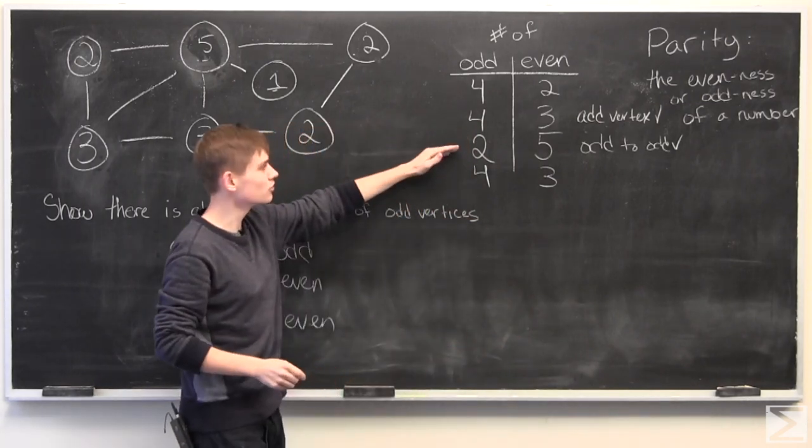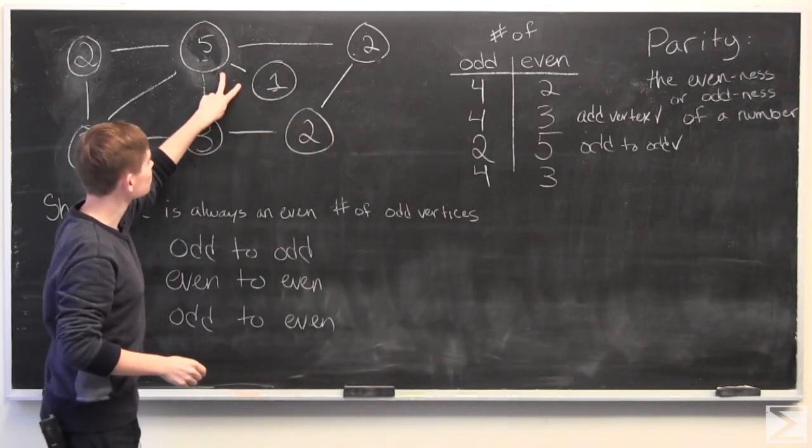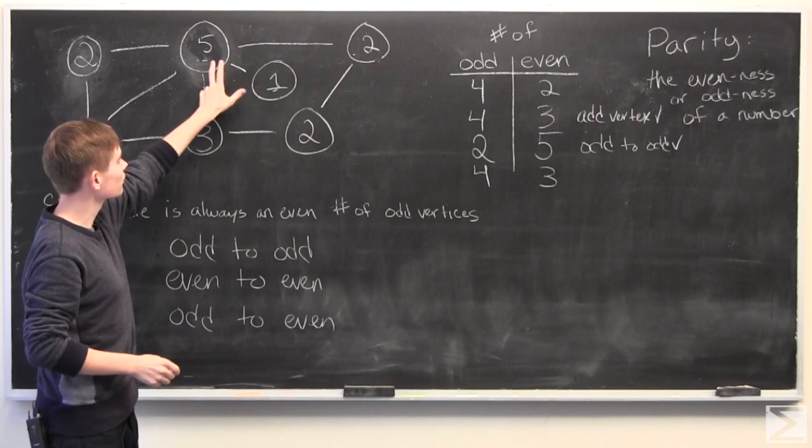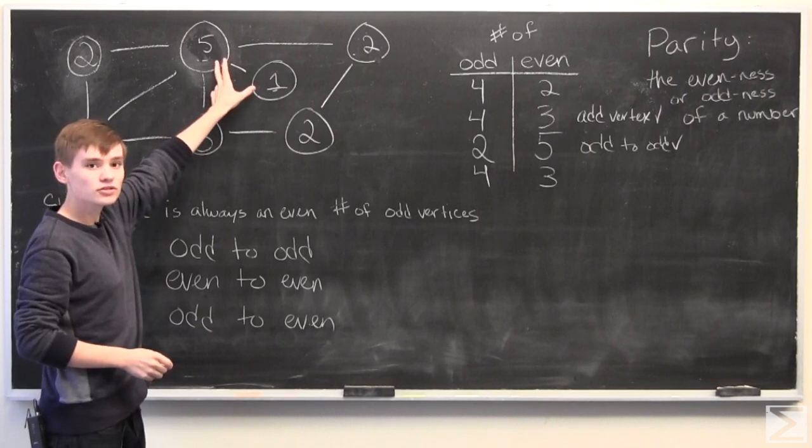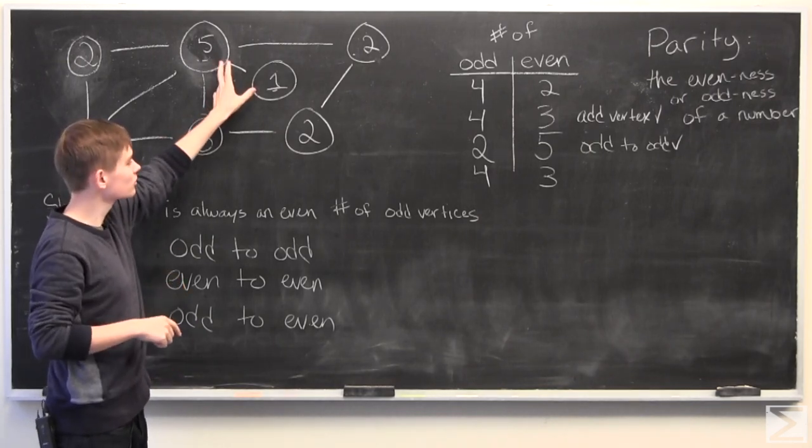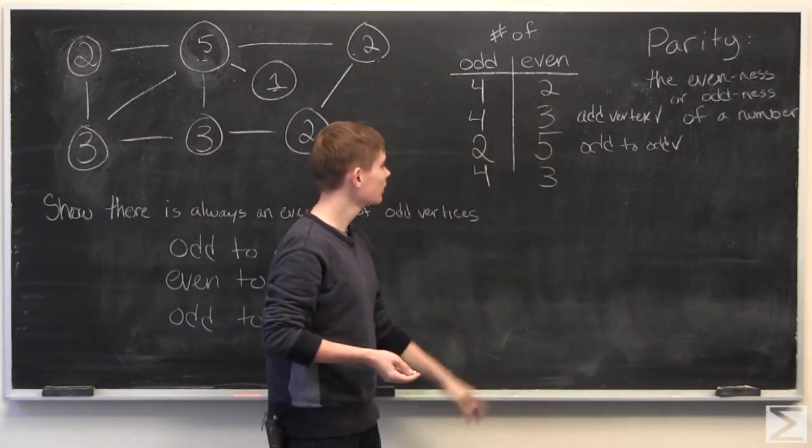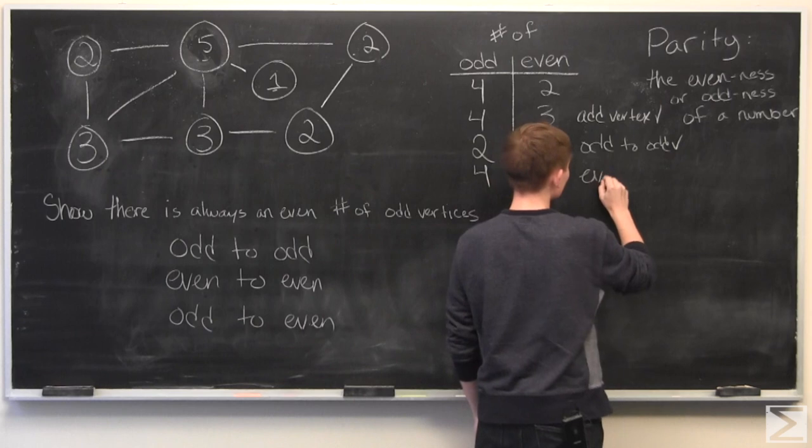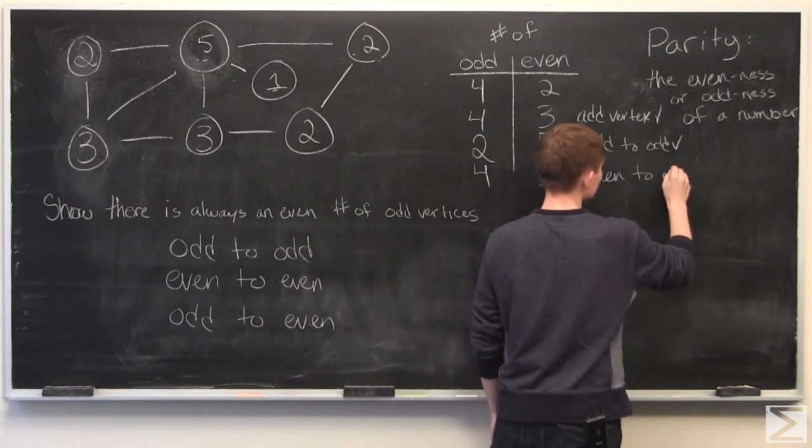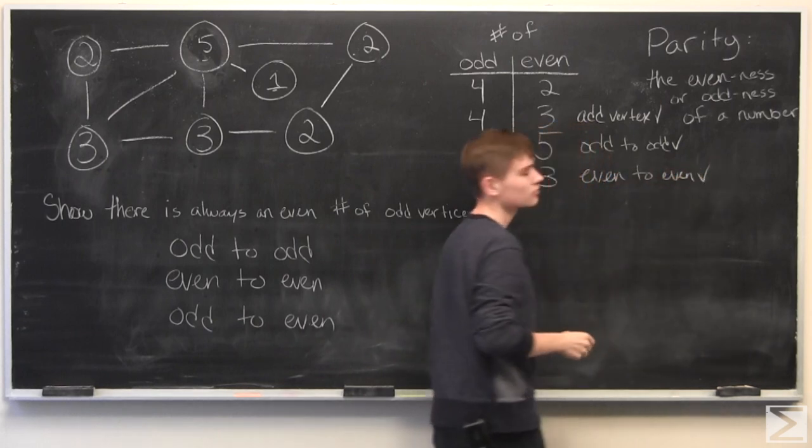And the same thing is true of what I said here. Since you added an edge, you change the parity of these two. So you get two more odd vertices. And if you add two, you conserve parity. And so, even to even is good.